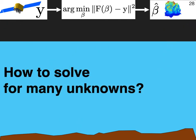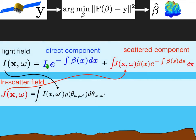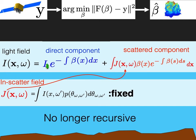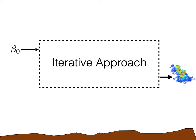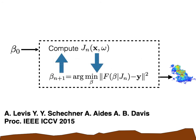So how do we solve this problem for many unknowns? Well, if we look back at the image formation model, we can see that for a fixed j, this is no longer a recursive relation. In fact, now it's a simple function of the optical density beta. This makes the minimization given j fast to compute. So with this in mind, we devise the following iterative approach. Starting with some initial guess, we can compute j by solving a forward, time-consuming, recursive problem. With j fixed, we update beta by solving an inverse non-recursive problem, which is quick to compute. Now these two steps are alternated until convergence. And for more details, please see our 2015 paper.